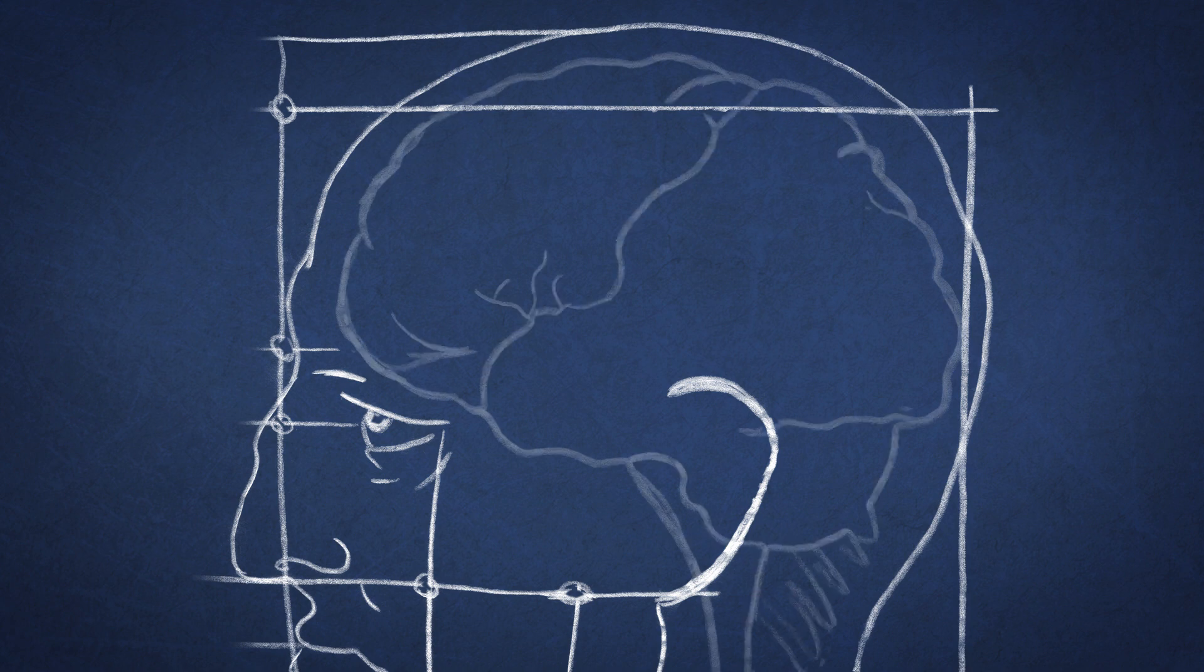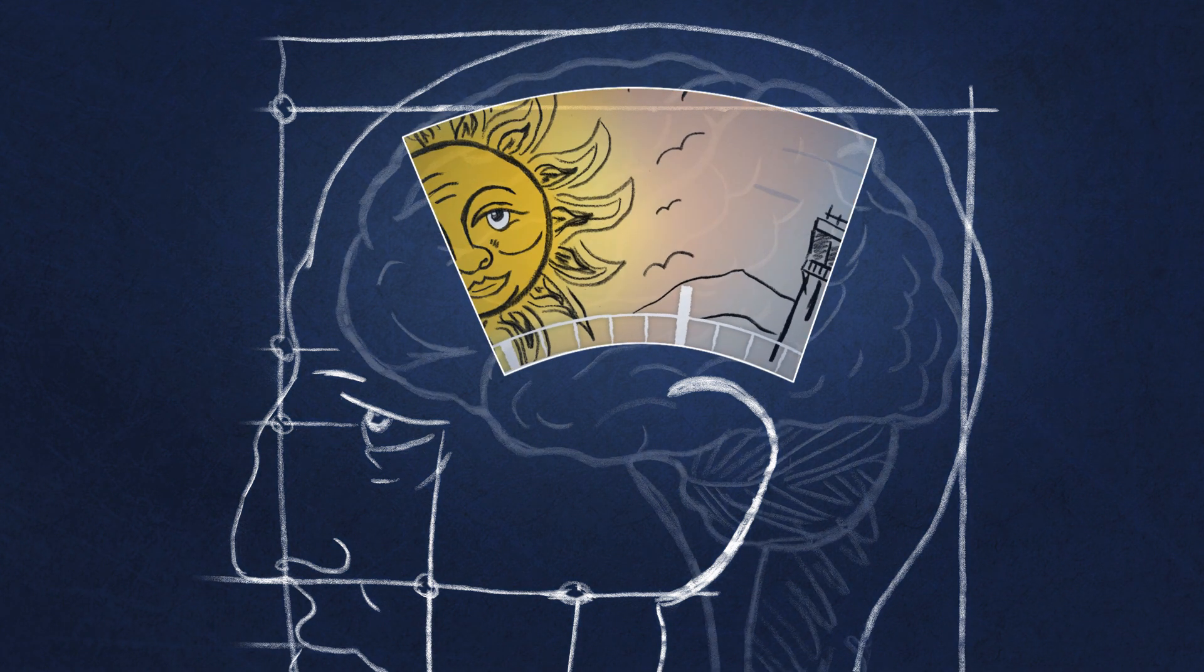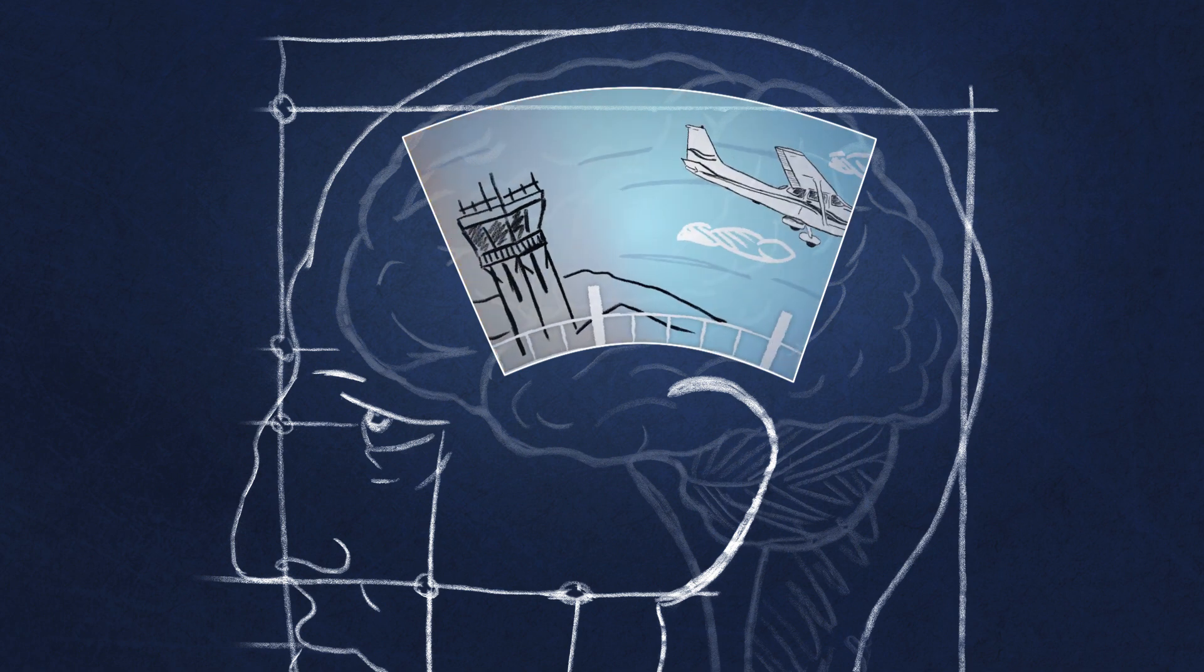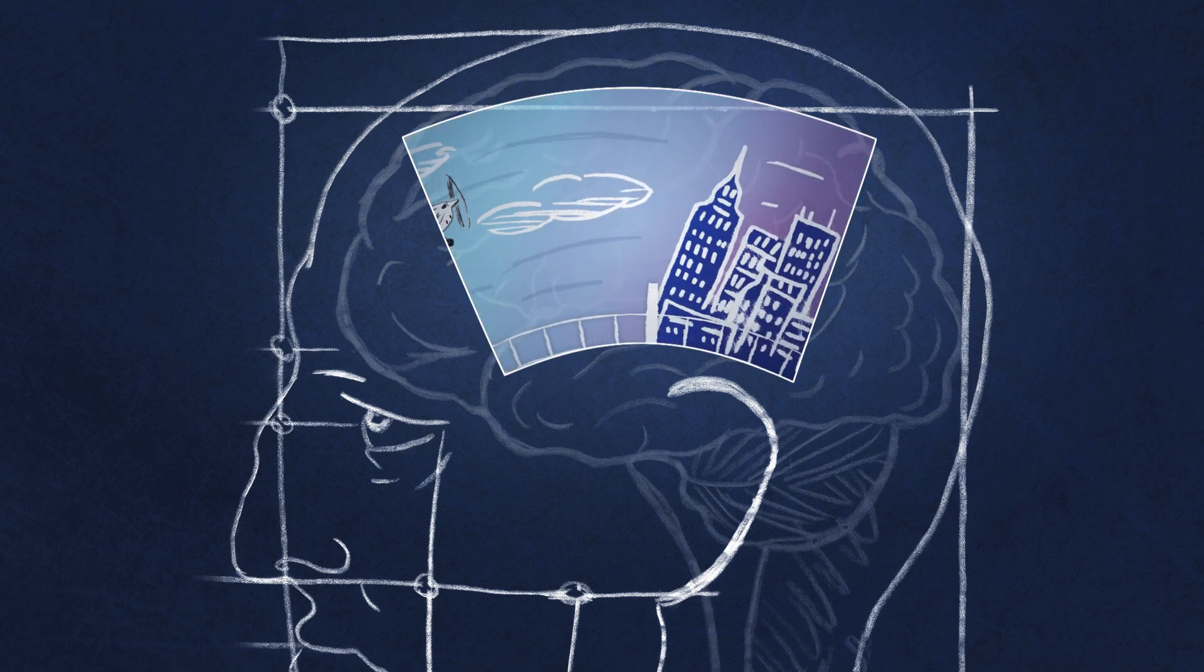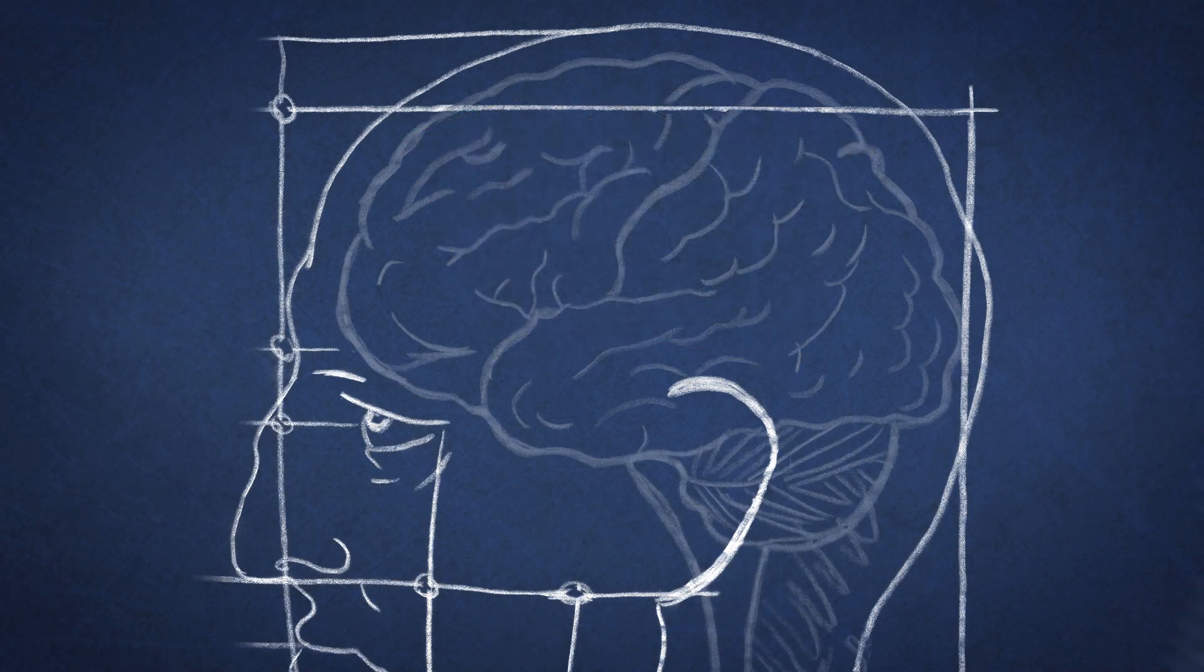Our brain relies on outside timekeeping cues like temperature, time of day, sleep, and physical activity to keep our body's internal clock, called circadian rhythm, running on schedule. Any time circadian rhythm is disrupted,